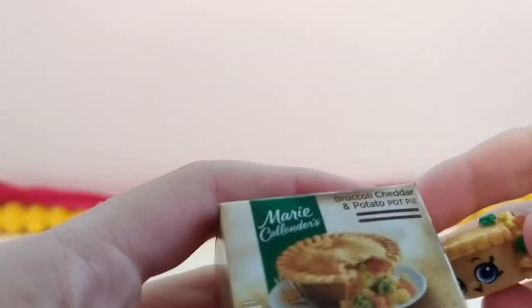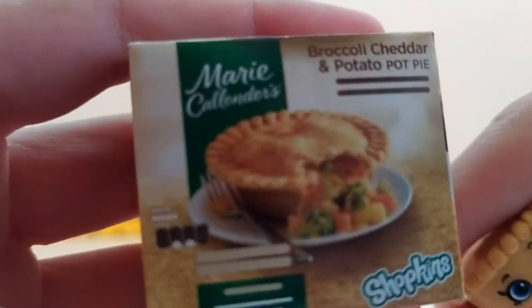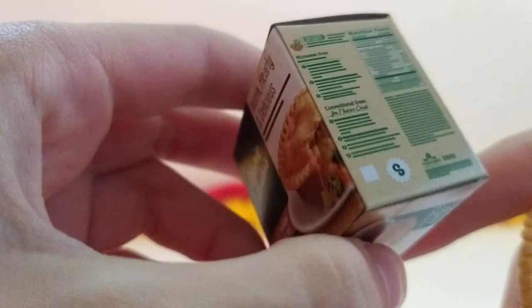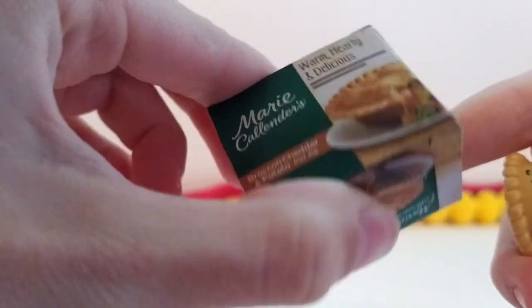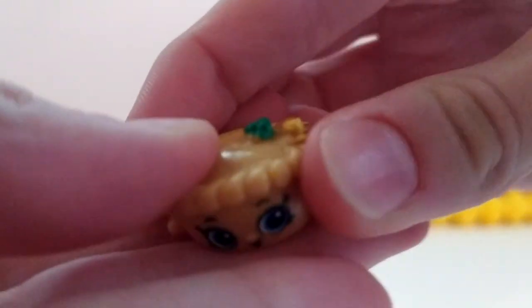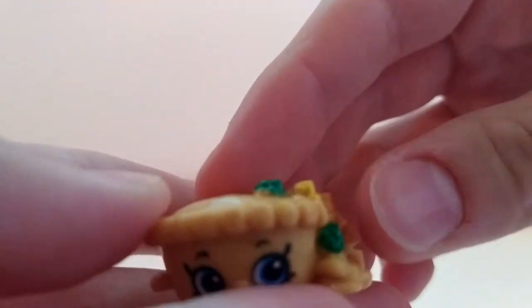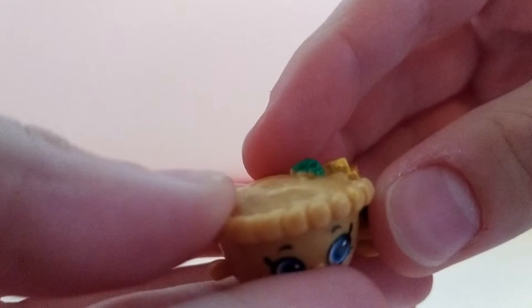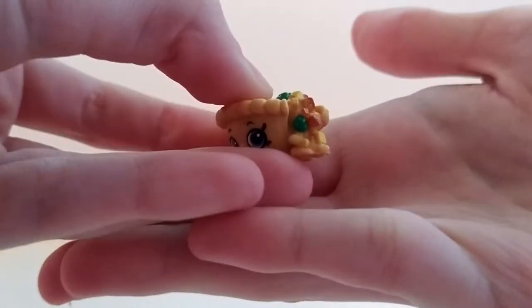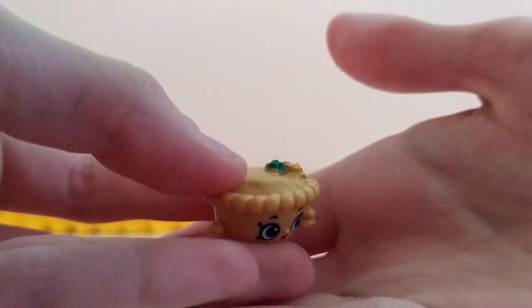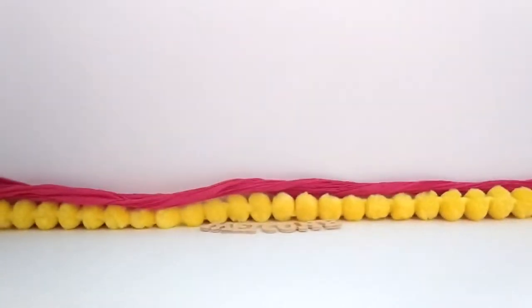Next, we have this little broccoli cheddar and potato pot pie. Warm, healthy, and delicious. And we have the little pot pie, which is kind of sticky. It has a cute little face. It looks like a pie and it's cut down the side so it looks like it's spilling out.